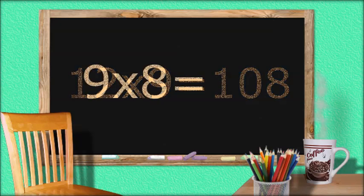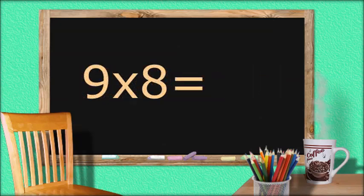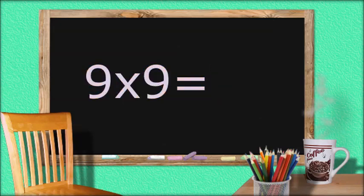9 times 8 equals 72. 9 times 9 equals 81.